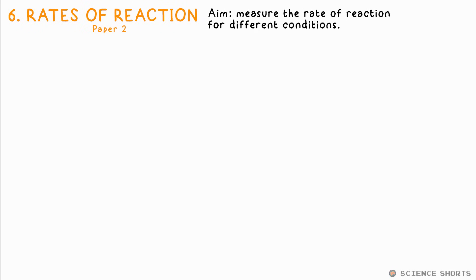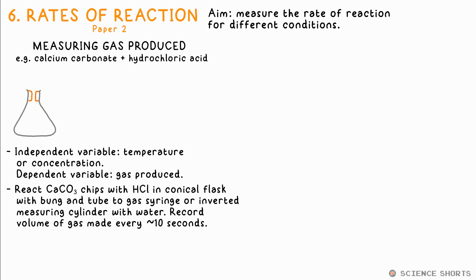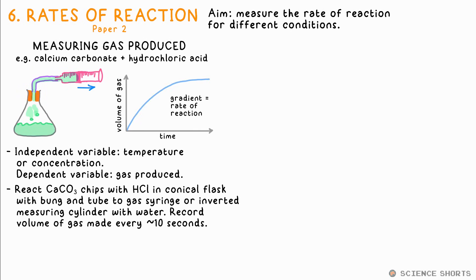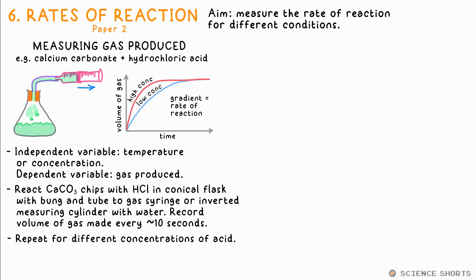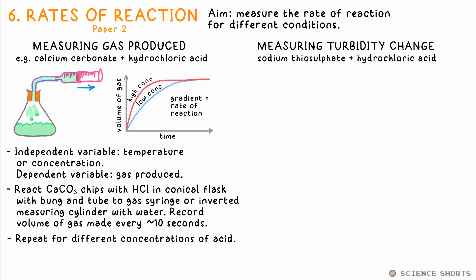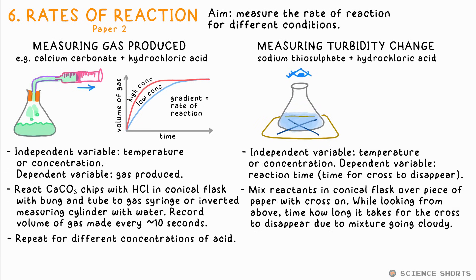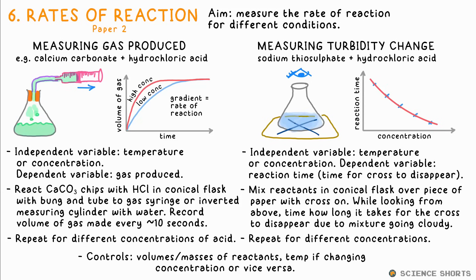Chemistry 6: Rates of Reaction. There are two practicals we can do to observe the rate of reaction. The first: if a gas is made from a reaction, we do it in a conical flask with a tube leading to an inverted measuring cylinder filled with water, allowing us to measure the volume of gas made every 10 seconds. We plot this against time to see the reaction curve — the gradient at any time is the rate at that time. We change a variable like temperature or concentration as our independent variable and plot multiple curves on the same axes to compare. The second practical involves a reaction between sodium thiosulfate and hydrochloric acid, which produces a product that causes the mixture to go cloudy — turbidity increases. We carry out the reaction in a conical flask over a piece of paper with a cross drawn on it. We use a stop clock to time how long it takes for the cross to disappear when viewed from above the flask — that's our dependent variable. We can then change a condition like temperature or concentration as our independent variable and plot the times against this.